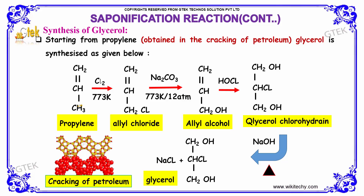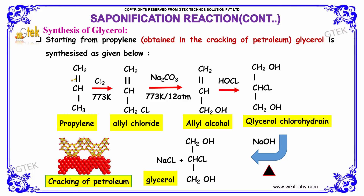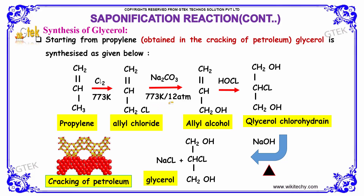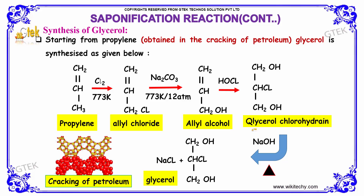Synthesis of glycerol: starting from propylene, glycerol is synthesized as follows. Propylene on chlorination at 773 Kelvin results in the formation of allyl chloride. Allyl chloride on further reaction with Na2CO3 at 773 Kelvin and 12 atmospheric pressure gives allyl alcohol. Further addition of HOCl results in glycerol chlorohydrin.